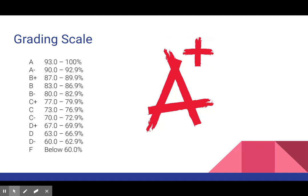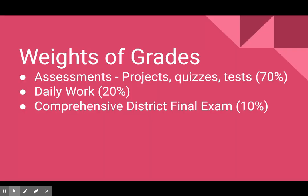Here's our grading scale so you can see how every grade is broken down. For the weights of your grade: assessments — things such as projects, quizzes, and tests — are going to be worth 70% of your grade. Daily work is going to be 20% of your grade; for example, today your Flipgrid is considered daily work and completing that will get you five points. And then we have the comprehensive district final exam, which is 10% and comes at the end of the trimester.